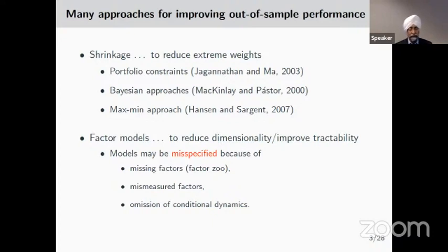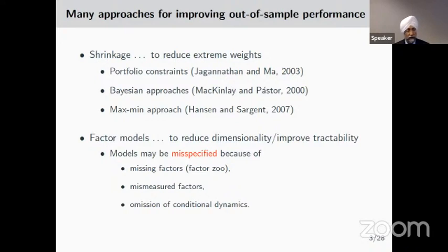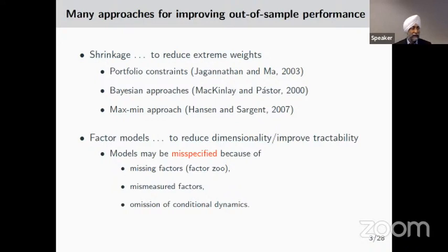I'll group those papers into two categories. One: shrinkage estimators that try to reduce the extreme weights from mean-variance optimization, either by imposing portfolio constraints, using clever Bayesian methods to shrink the estimators, or a more modern robust control approach using max-min optimization to restrict the effect of estimation error. Another strategy has been to take the N risky assets and reduce the dimensionality to K factors to improve tractability and reduce in particular the dimensions of the variance-covariance matrix of returns.